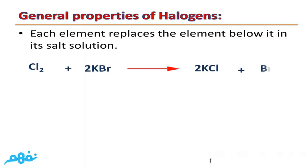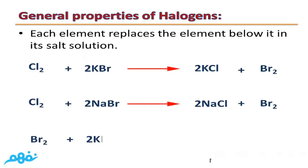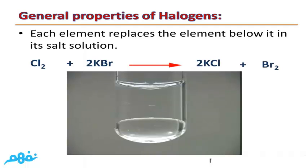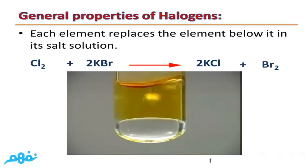Each halogen element replaces the element below it in a sole solution. The order is Fluorine, Chlorine, Bromine, Iodine. So Chlorine can replace Bromine because Chlorine is more active: Cl₂ + 2KBr → 2KCl + Br₂. Similarly, Bromine can replace Iodine: Br₂ + 2KI → 2KBr + I₂. In a demonstration, Chlorine reacting with Potassium Bromide releases Bromine — shown by the brown color of the displaced Bromine.